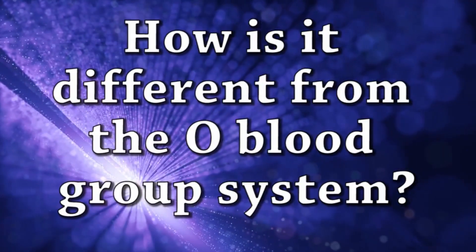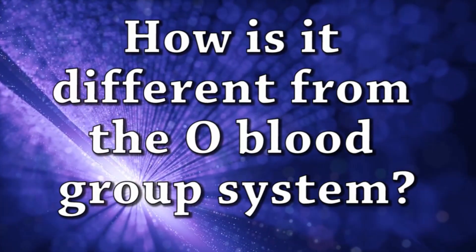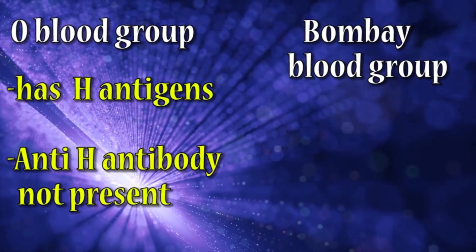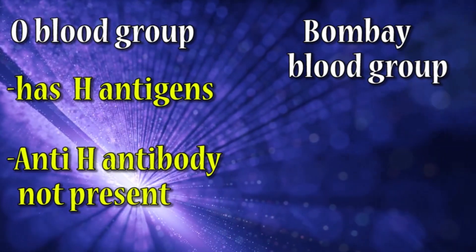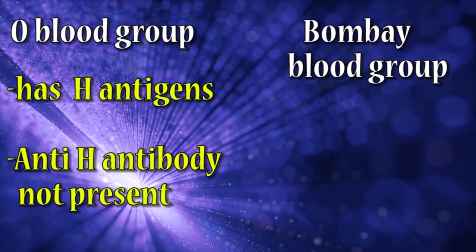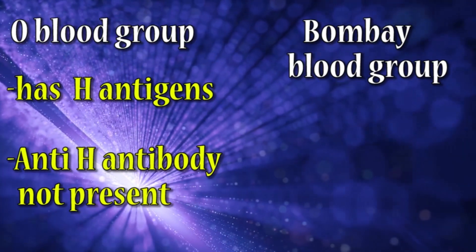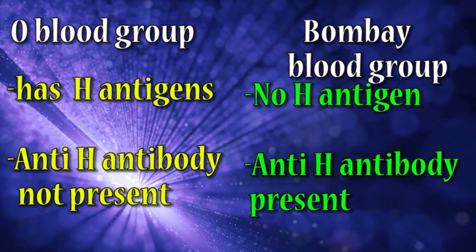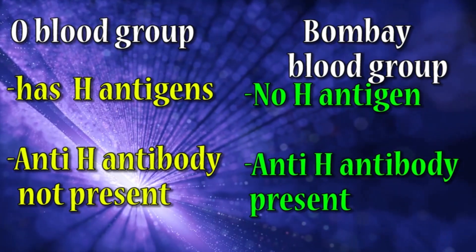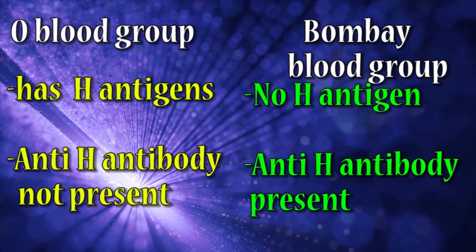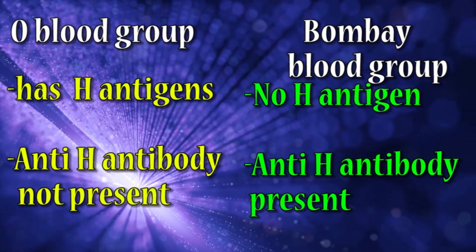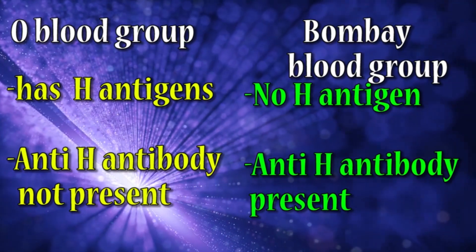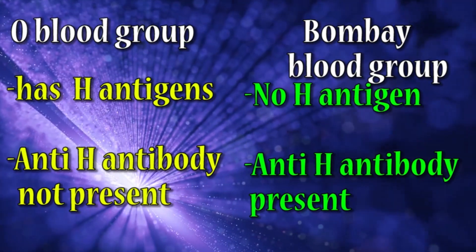How is it different from the O blood group? The O blood group has H antigens, and anti-H antibody is not present in the O blood group. In contrast, the Bombay blood group has no H antigen, and anti-H antibody is present in the Bombay blood group. I think this video helps for exams.